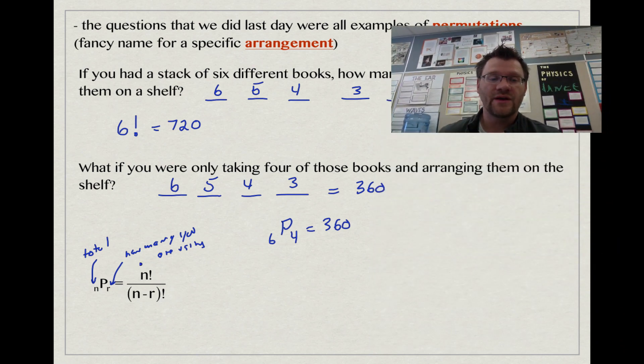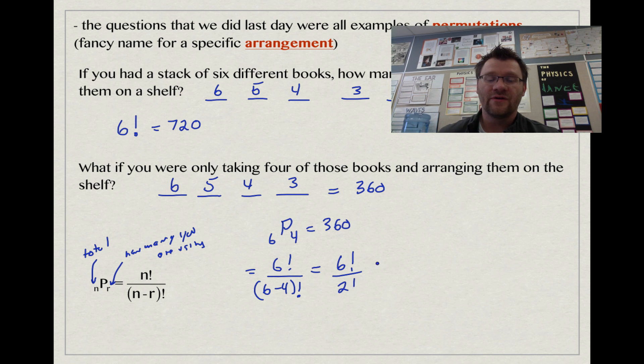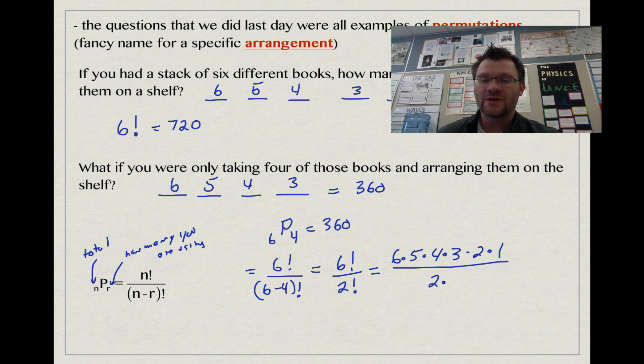If we use the factorial notation part of this equation, we get 6 factorial on top and 6 minus 4 on the bottom. That's just 6 factorial divided by 2 factorial, which gives us 360 again. The longest way: 6 factorial is 6 times 5 times 4 times 3 times 2 times 1, divided by 2 times 1, which is 2 factorial. These last two cancel out with the 2 on top, and we get 6, 5, 4, 3, which is exactly what we did up here.